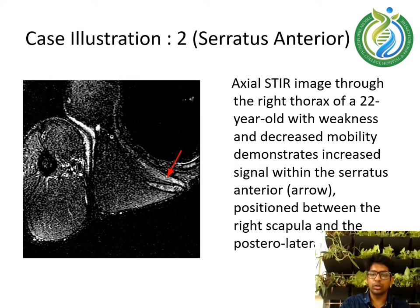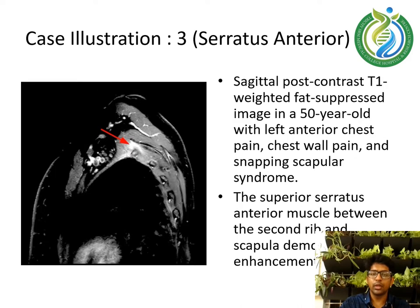The axial STIR image through the right thorax of a 22-year-old with weakness and decreased mobility demonstrates increased signal within the serratus anterior, indicated with the arrow, positioned between the right scapula and the posterolateral chest wall. Case illustration 3: sagittal post-contrast T1-weighted fat-suppressed image in a 50-year-old with left anterior chest wall pain and snapping scapula syndrome shows serratus anterior muscle enhancement between the second rib and scapula.